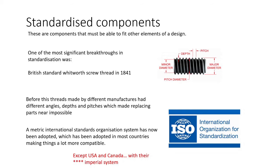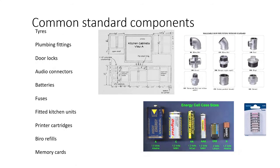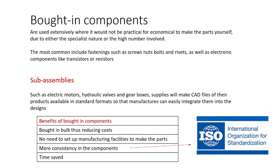Common standardised components that are the same wherever you go include tyres, plumbing fittings, door locks, audio connectors, batteries, fuses, kitchen units, printer cartridges, pen refills, and memory cards — the list is extensive. It's just easier for many companies to buy those parts in rather than setting up another part of the factory to make them, when you can simply buy 10,000 screws or fittings as needed. This is called subassembly — buying in kits like hydraulic valves, gearboxes, or electric motors with all the parts included.